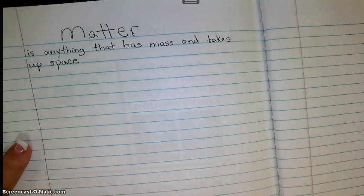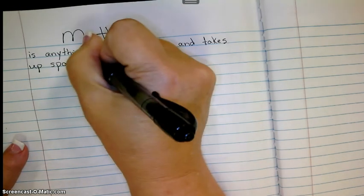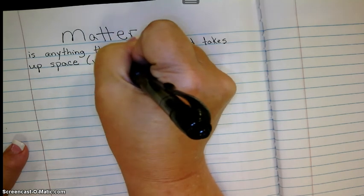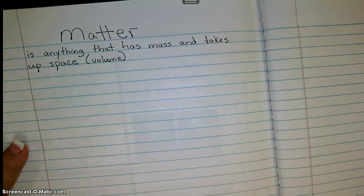So when we talk about matter, it has mass, can be measured. Mass is a measurable amount, usually in grams, right? And takes up space. There's a math word for taking up space and we call that volume. So if it has mass and volume, that's another way you might hear the definition of matter.